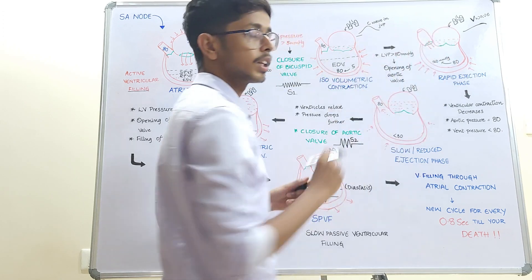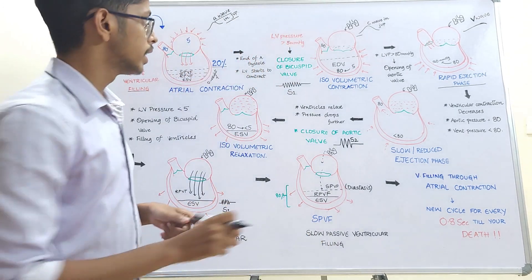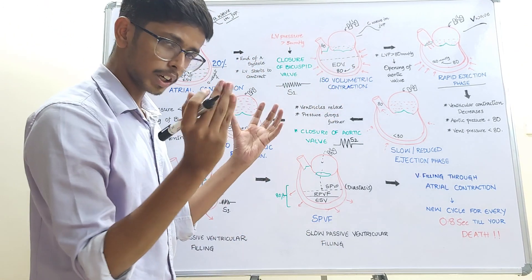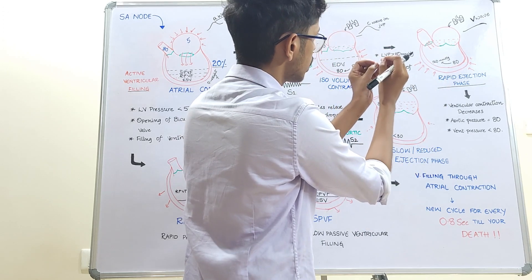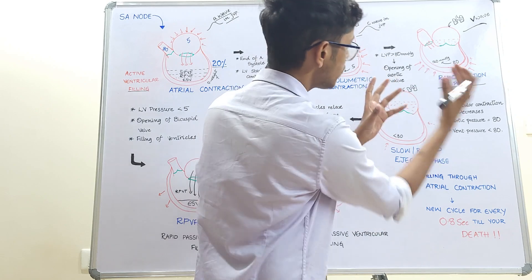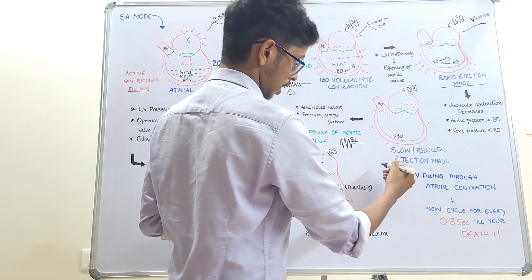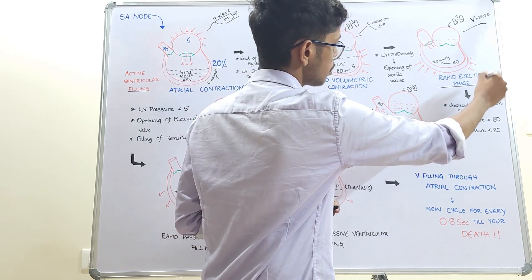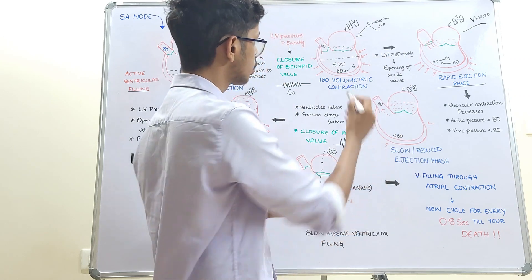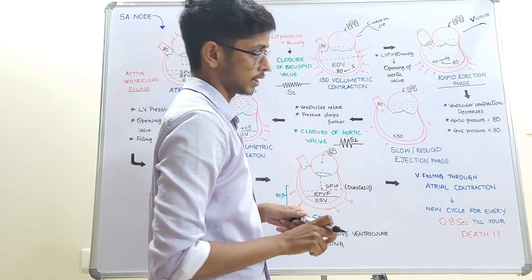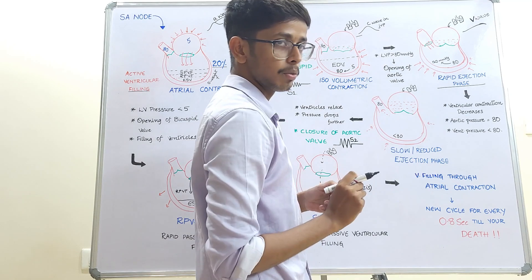During the initial rapid ejection phase, the high tension built up in the ventricular walls during isovolumetric contraction causes rapid ejection of blood from the ventricle to the aorta. This rapid ejection phase lasts less time than the slow ejection phase, but most of the blood volume is transmitted during this rapid ejection phase. The aortic pressure rises from 80 to 120 mmHg in a normal person.